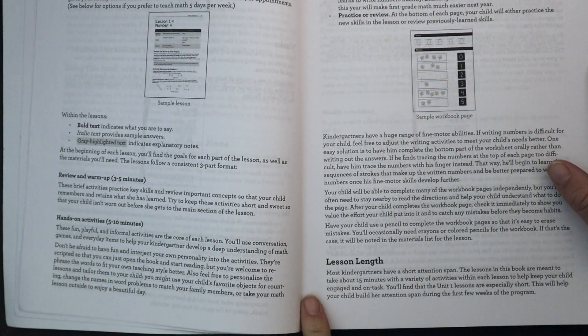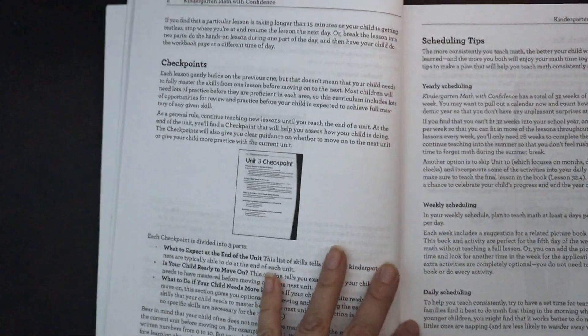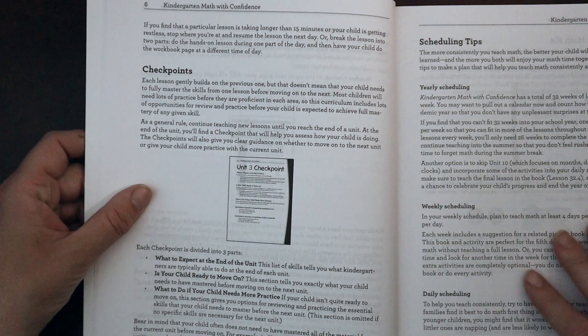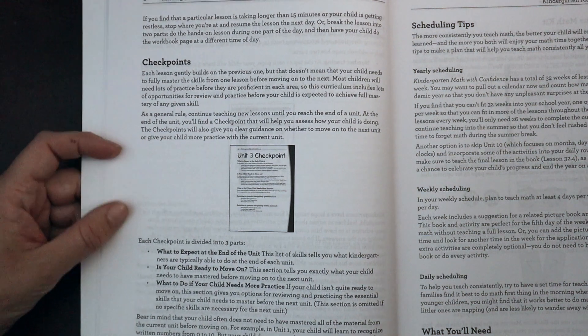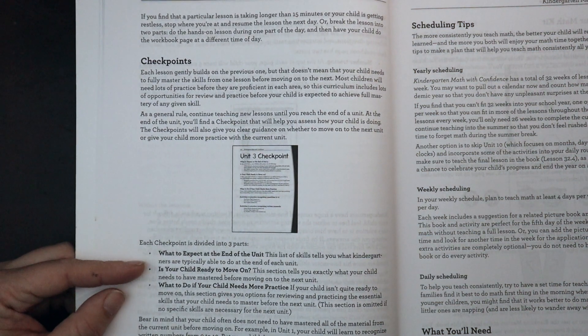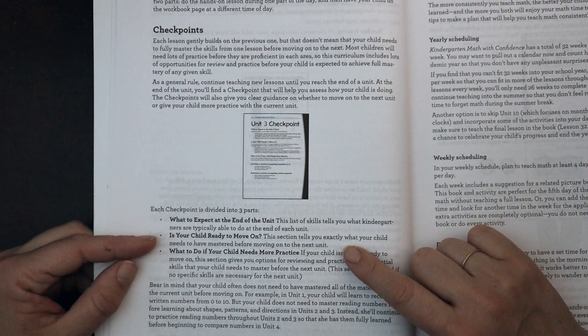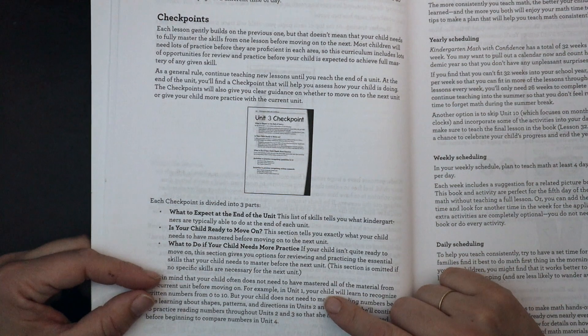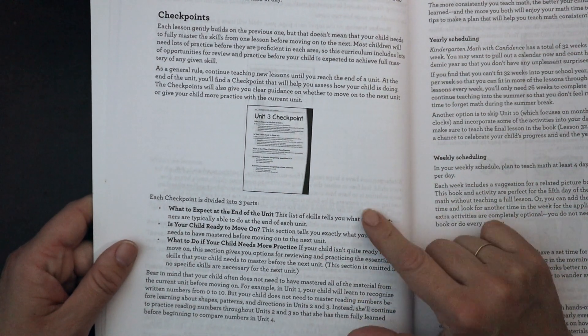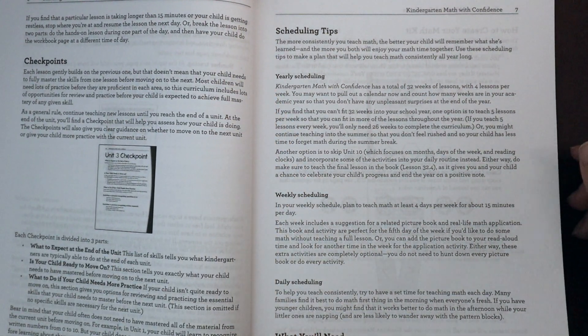Most of these lessons are developed to last about 15 minutes. It talks a little bit about the attention span of your average kindergarten student. It also explains that the unit one lessons are really short to get your student into the rhythm and routine. There are some little checkpoints throughout. The checkpoints are divided into these three different parts. What to expect at the end of a unit. These are the skills that your child should be able to do at the end of this unit. Some questions about if your child is ready to move on to the next unit, and then what to do if your child needs more practice. This is a nice kind of gauge for the homeschool parent.